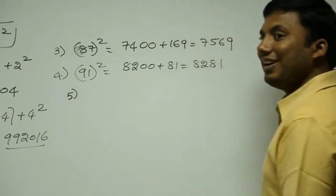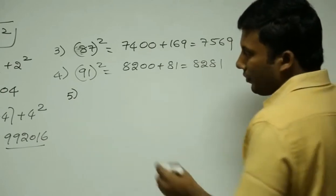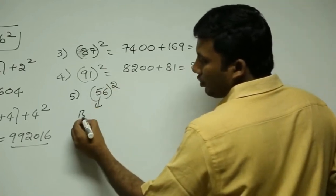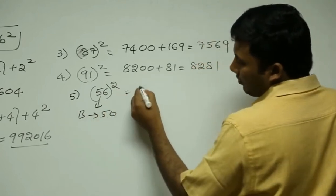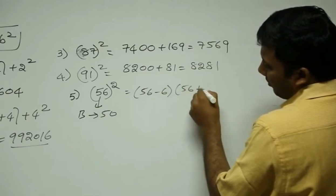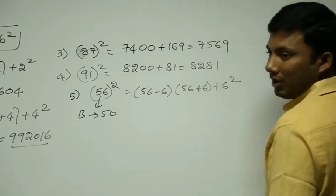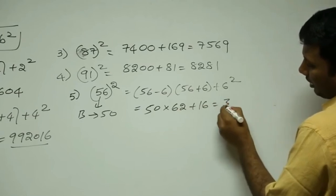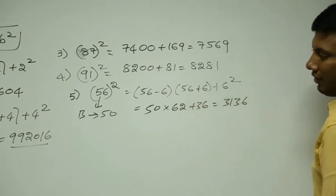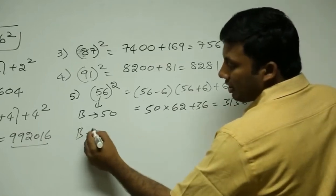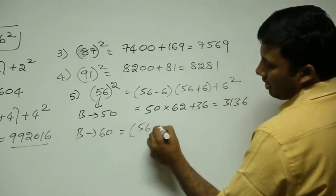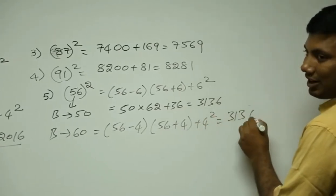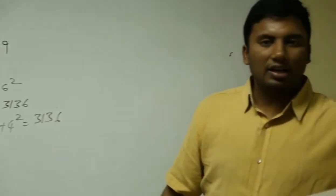Now, is this method valid only for powers of 10? No. Suppose 56²: 56 is nearest to which multiple of 10? 50. So: (56 - 6)(56 + 6) + 6² = 50 × 62 + 36 = 3100 + 36 = 3136. But if you take base 60: (56 - 4)(56 + 4) + 4² = 52 × 60 + 16 = 3120 + 16 = 3136. Both give the same answer: 3136.